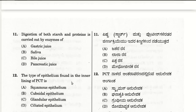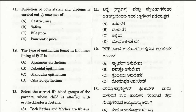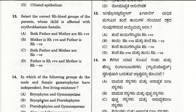The twelfth question: the type of epithelium found in the inner lining of the proximal convoluted tubule is cuboidal epithelium. The thirteenth question: for erythroblastosis fetalis, the mother should be Rh-negative and the father should be Rh-positive. So the correct choice D is father is Rh-positive and mother is Rh-negative.